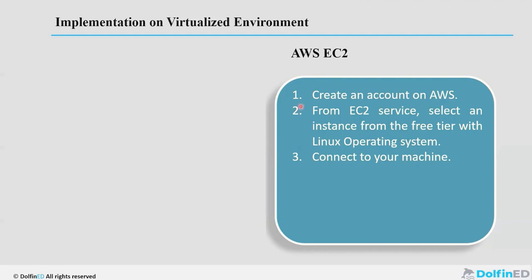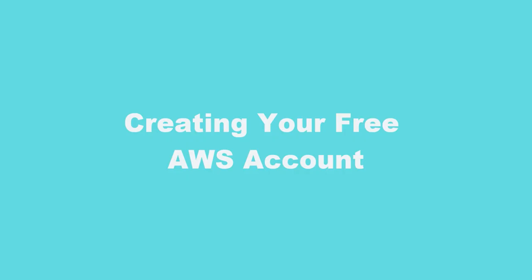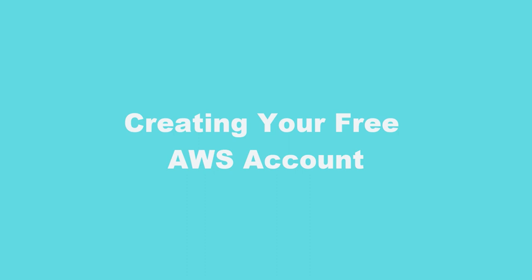So how can we do that? First, we'll create an account on AWS. Then from the EC2 service, you select an instance from the free tier and use the Linux operating system. Then you'll connect to your machine from the comfort of your laptop or online. Let's create our first AWS account.